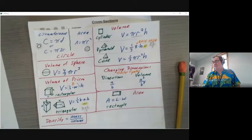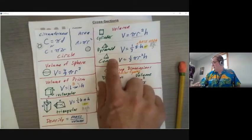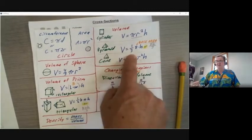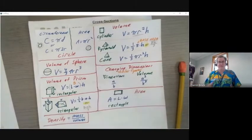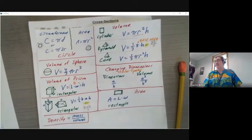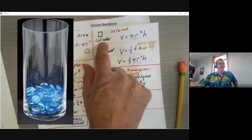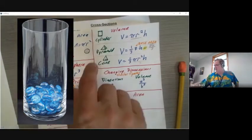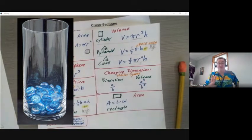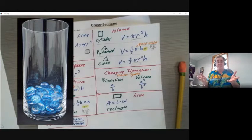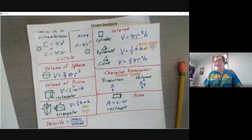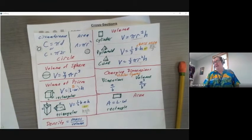There may also be problems where I give you the volume and ask you to work backwards to find the radius or the length of one side. There's also a problem with a cylindrical base that has marbles in the bottom, asking how much water you can put in. You find the volume of the cylinder and subtract the volume of all the marbles, since the marbles take up space the water can't fill.